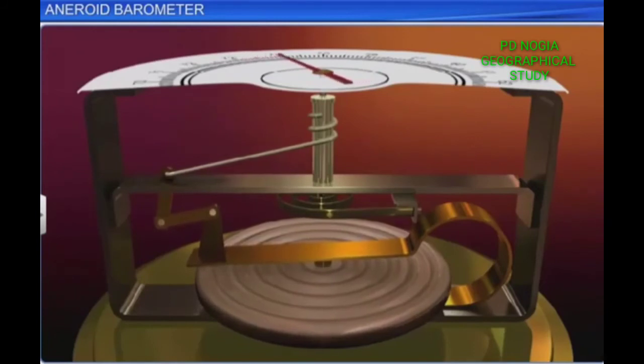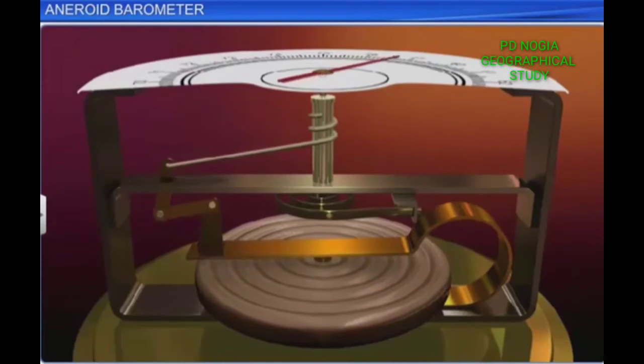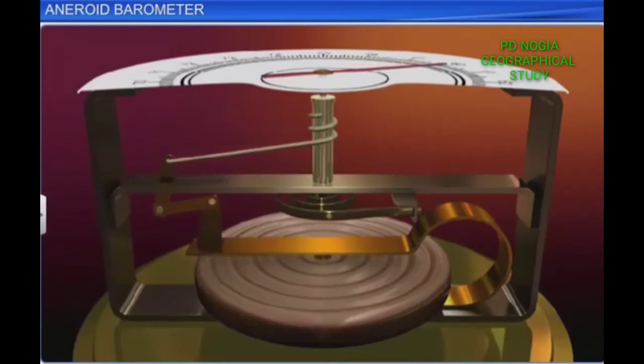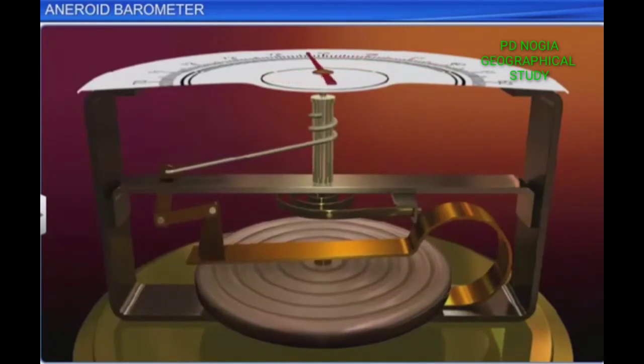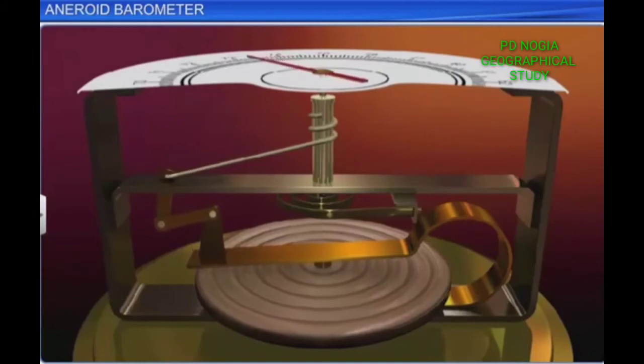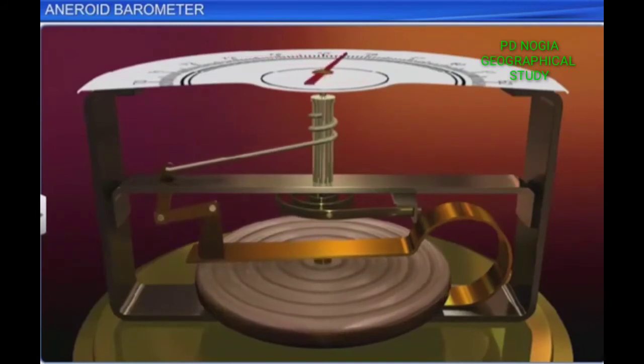If the atmospheric pressure increases, it pushes the diaphragm downward. The motion of the diaphragm makes the central lever move in the downward direction. This small motion of the central lever is magnified by the system of levers and the metallic chain is pulled.